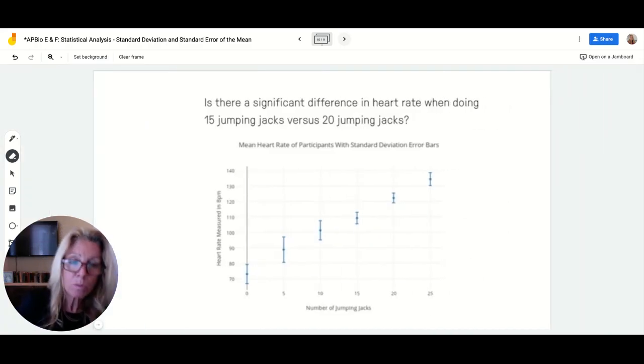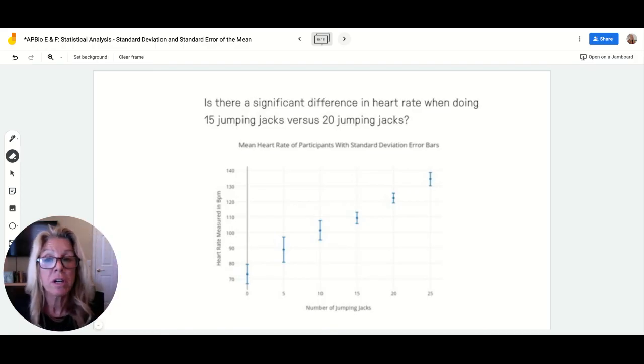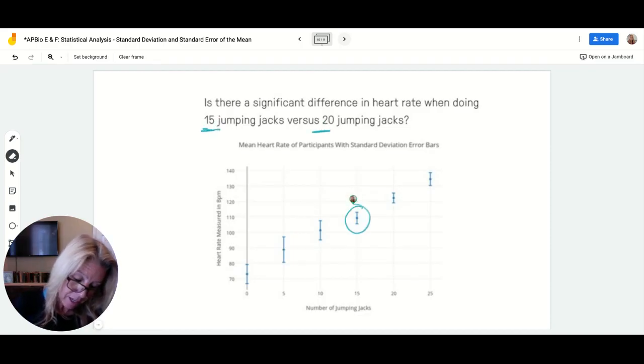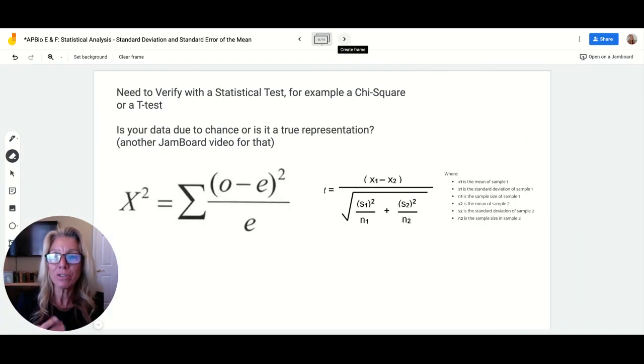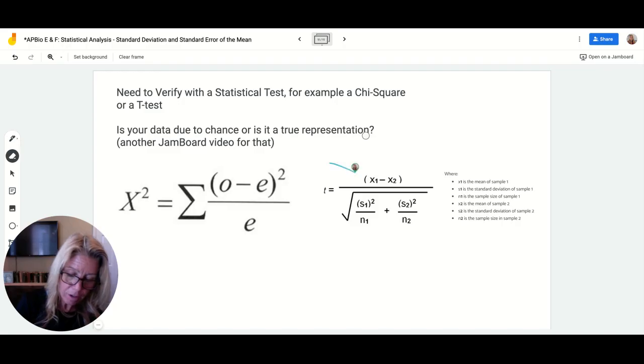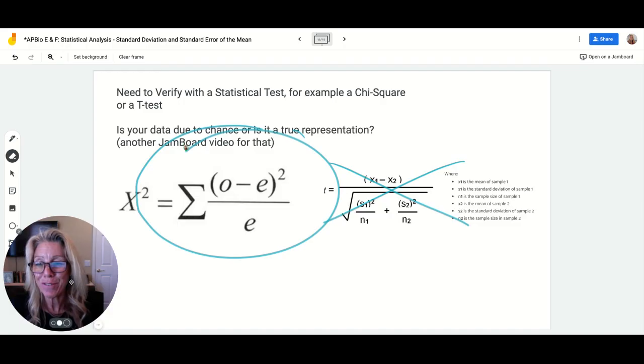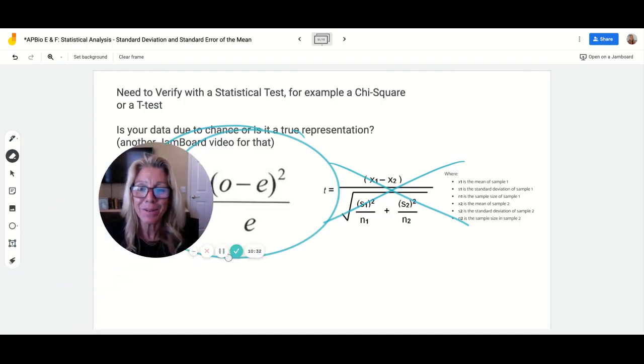How about this one? In this one we have, let's answer the question. It says, is there a significant difference of heart rate when doing 15 jumping jacks versus 20? Well, if you look at 15 and you look at 20, their means do not overlap and their error bars do not overlap. So yes, it is probably statistically significant. So you need to test those with a chi-square test or a t-test. I'm going to tell you for the college board, this is not one of the ones you have to know, but this one you do, and I'll make a different video for that. And if you're one of my students, I will see you in class.